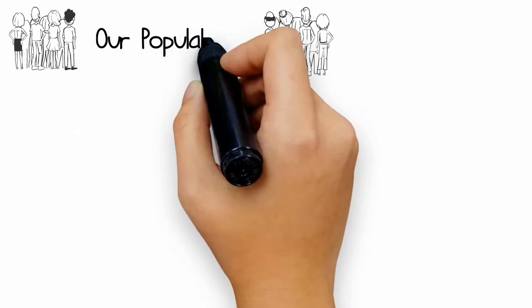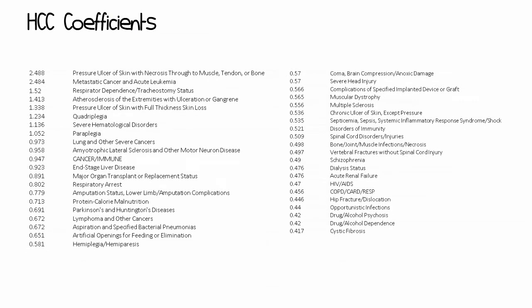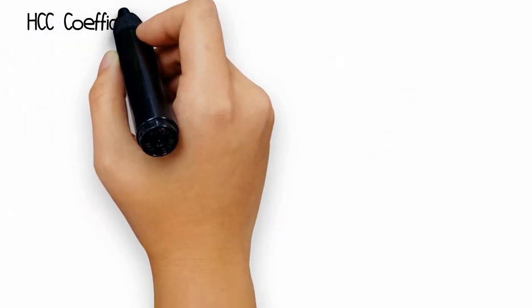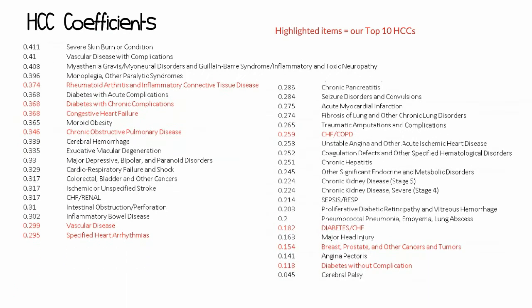If you take a quick look at our population, you can see that COPD, vascular disease, diabetes with and without chronic complications, heart arrhythmias, and CHF round out our top six and greatly outnumber those that follow. Here is a list of all the HCCs ranked by coefficient or risk score, the highest being pressure ulcer of the skin. Those highlighted in red are our ACO's top 10 HCCs.